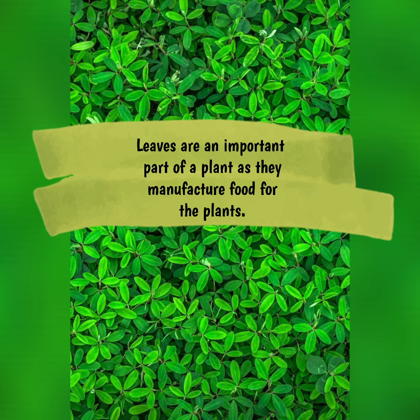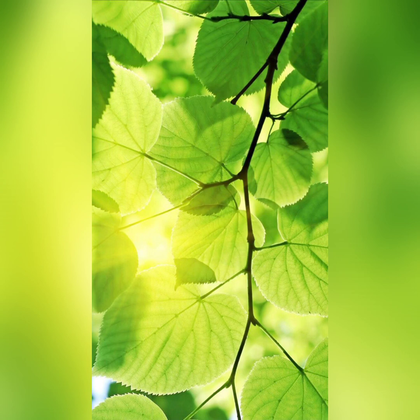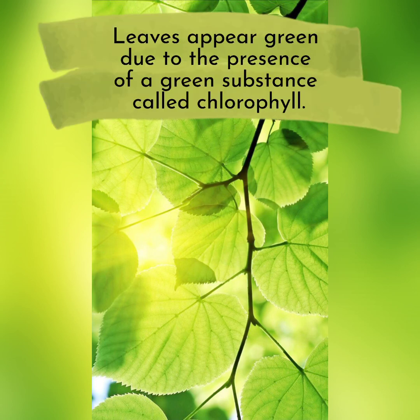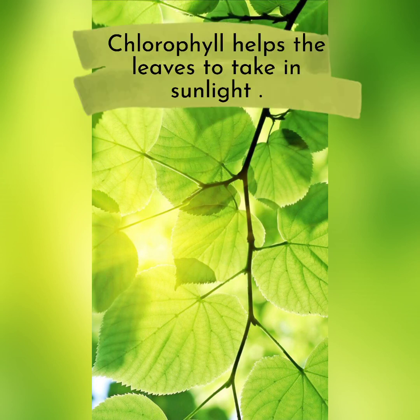Of all the parts of a plant, leaves are one of the most important as they manufacture food for the plant. You must have noticed at home that almost all leaves are green in color. Do you know why? Yes, leaves appear green due to the presence of a green substance called chlorophyll. This chlorophyll helps the leaves to take in sunlight. We all know how important sunlight is to plants — without sunlight, they will wither and die.